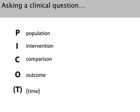P is Population, I is Intervention — although we'll get back to that — C is Comparison, O is Outcome, and T is Time. So let's take each one of these.